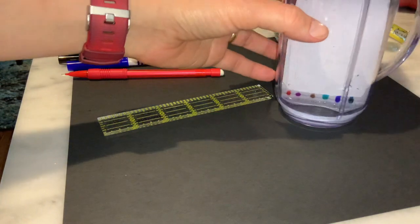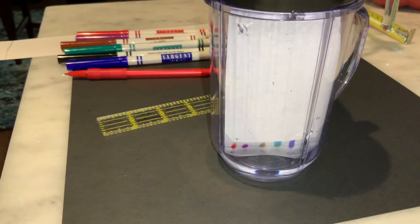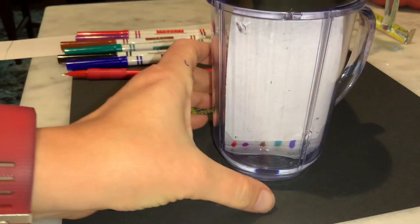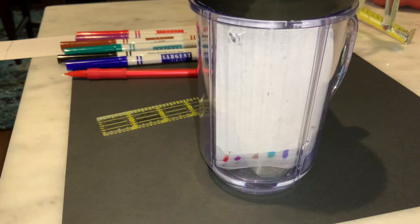So as we can see the water is already moving up the paper and it's taking the ink with it. So we're going to let this sit here and let the solvent move up the paper until we get close to the top.